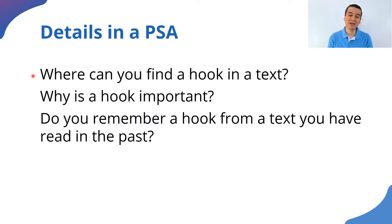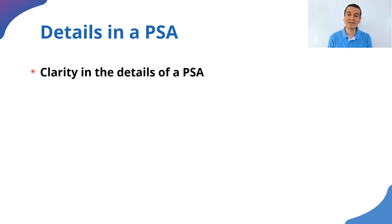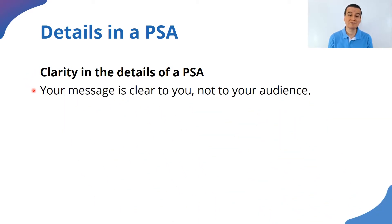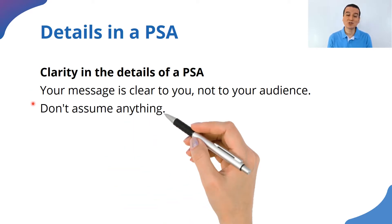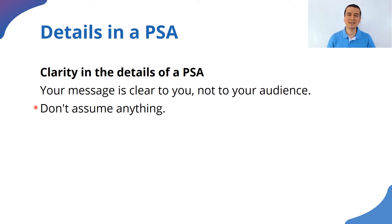What type of texts are we focusing on? Public service announcements. Now I would like to focus on clarity in the details of a PSA. How do we add clarity, or how do we know that our public service announcement is clear to the audience? I have some recommendations. Your message is clear to you, not to your audience. What you have in your mind is clear to you, but probably not for them. They only have a few seconds to listen to your announcement, and with that they should get all the details. So you know that you have to be very specific in your details. Don't assume anything — don't think they already know this so I should not say it. Include all the information they need so that your message is clear.